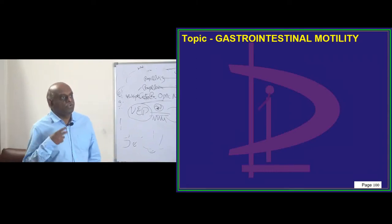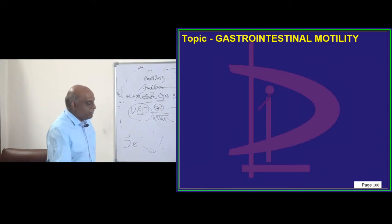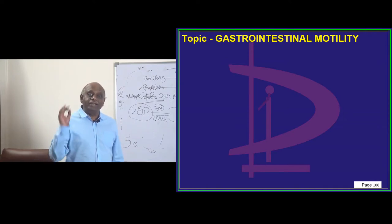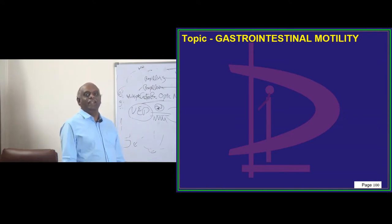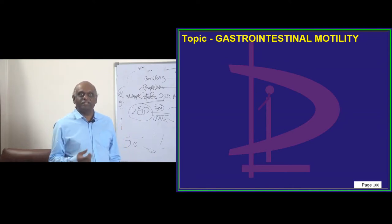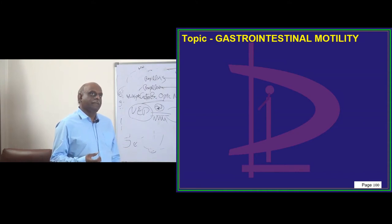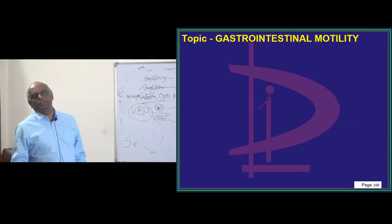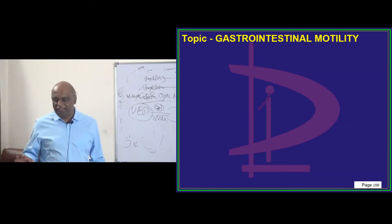Let us take up the most important topic — pet ki papi — gastrointestinal motility. How that peristalsis, the rate of peristalsis, is a repeatedly asked topic in the NEET-PG exam, DNB, AIIMS, PGI — everywhere.